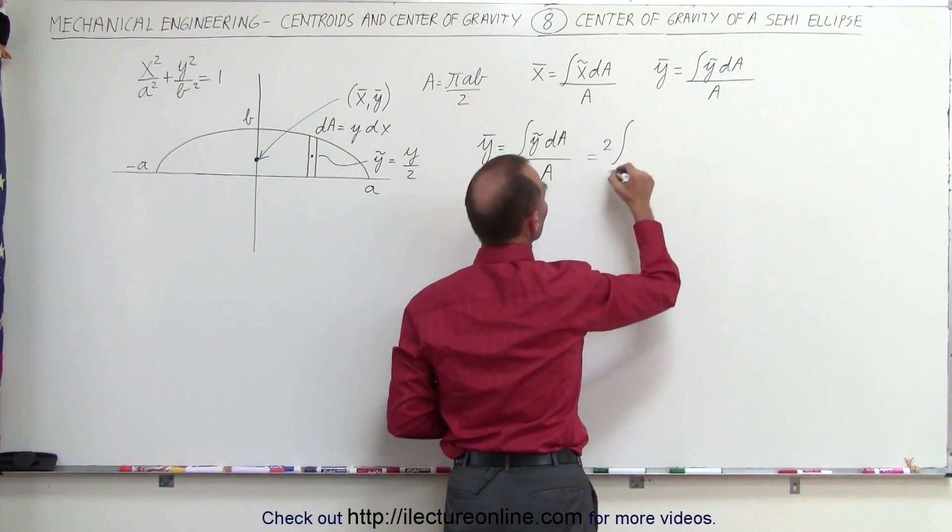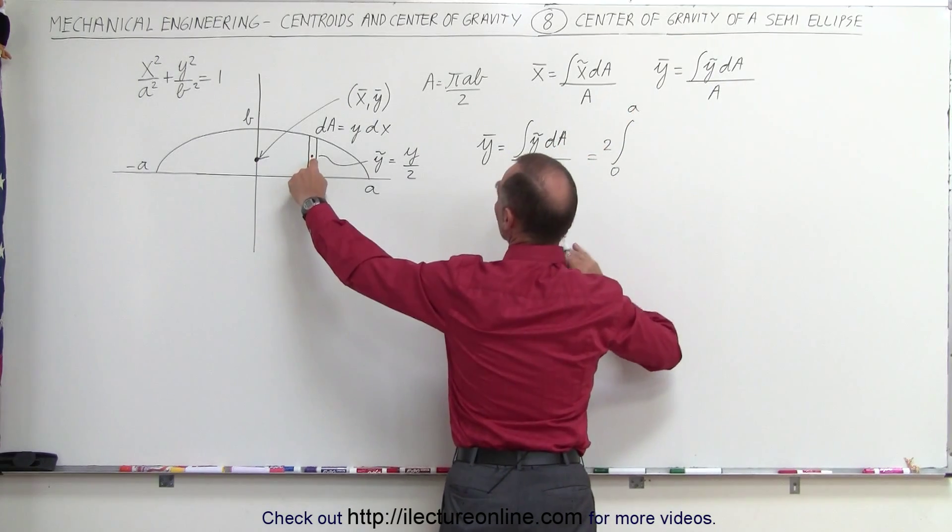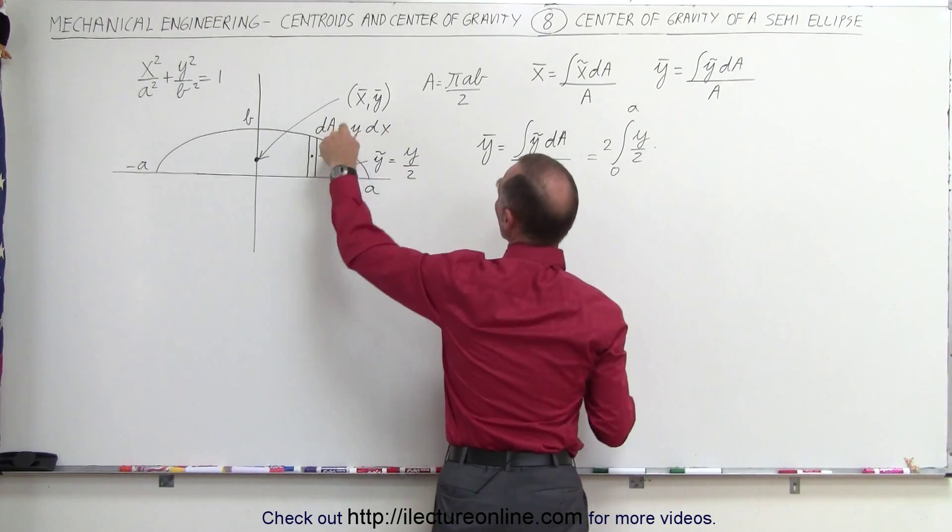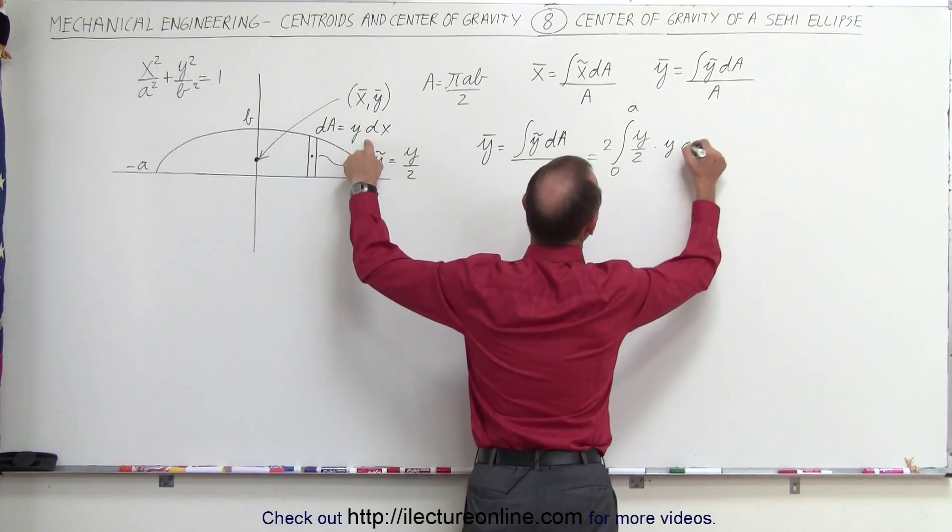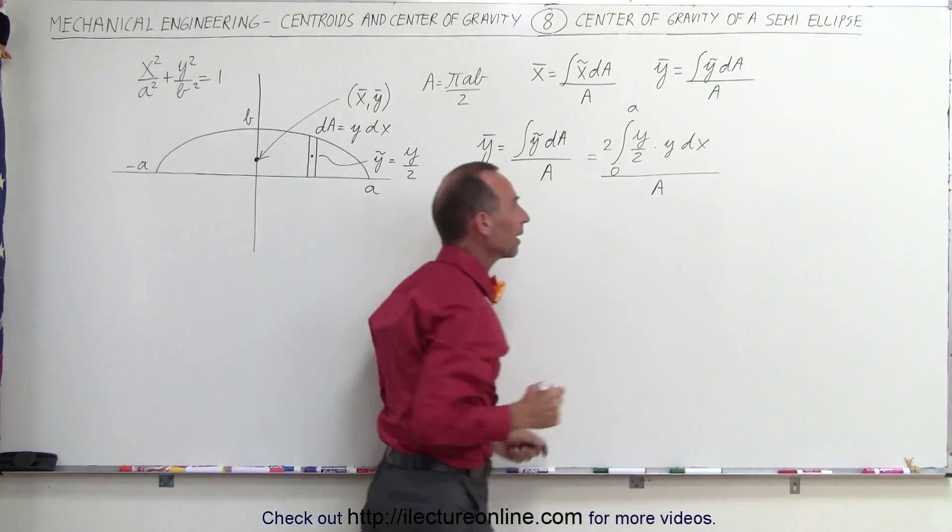So we're going to go 2 times from 0 to A. The y-coordinate of that point right there is y over 2 times the dA, which is going to be y times dx.